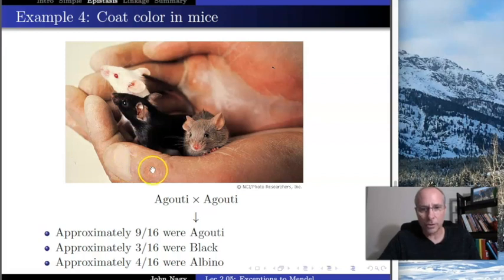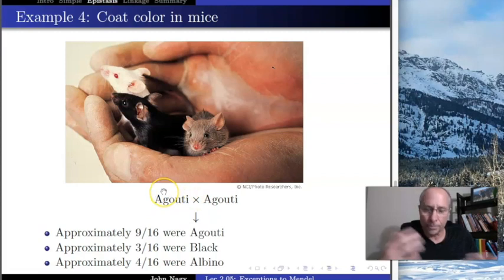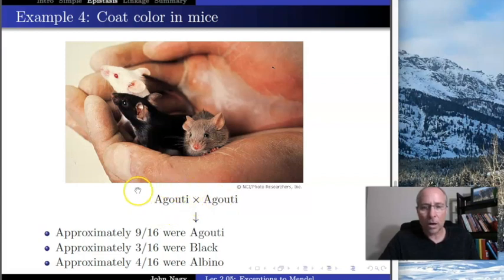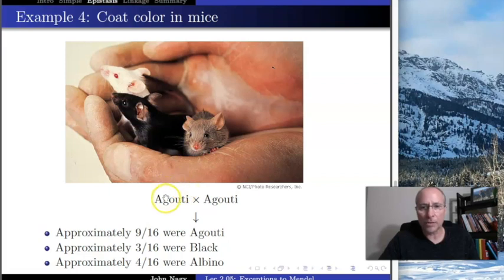In one study performed over and over again, two agouti mice were bred together, and the offspring were approximately 9/16ths agouti, 3/16ths black, and 4/16ths albino. That completely blows away the idea of incomplete dominance, because if it were incomplete dominance, you'd expect one quarter black, half agouti, and one quarter albino — and that is not what they got.